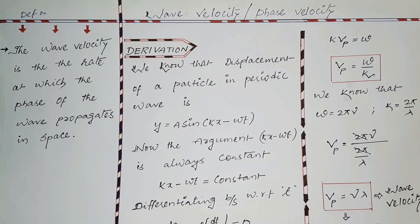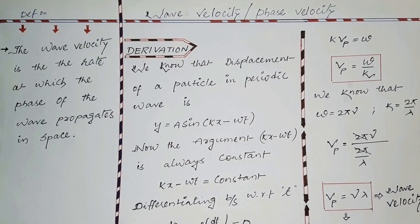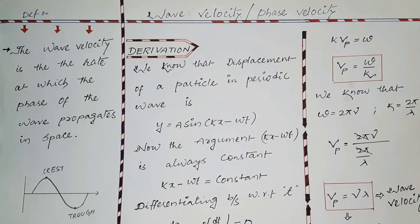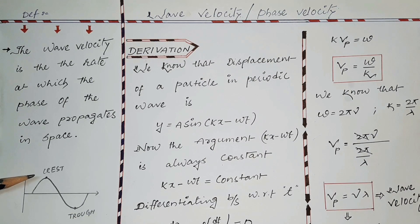The next term we are going to learn is wave velocity, also called phase velocity. Wave velocity is the velocity with which a wave propagates or moves forward in space. We can also define it as the rate at which the phase of the wave propagates in space. We can have many phases, such as a crest or a trough, so the wave velocity is the velocity with which a crest moves forward in space.